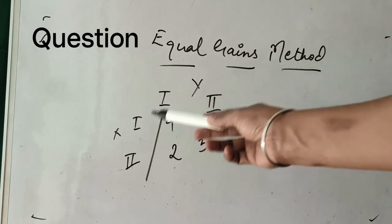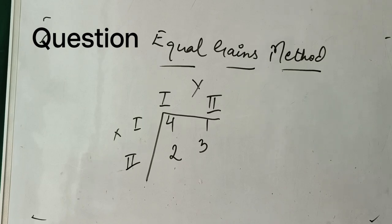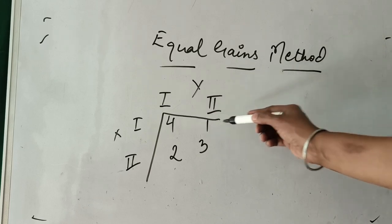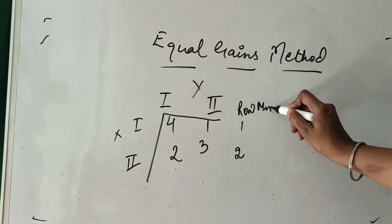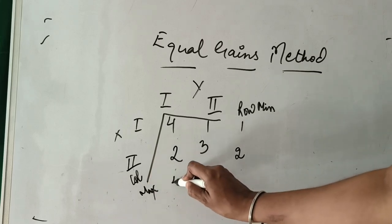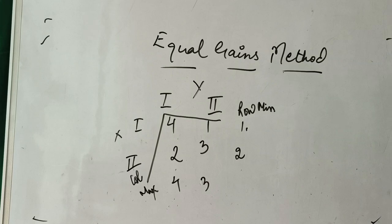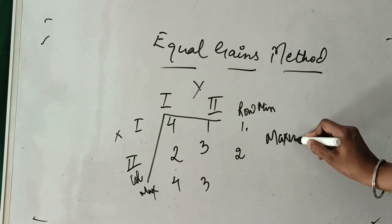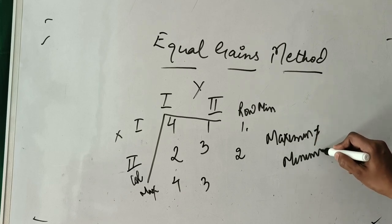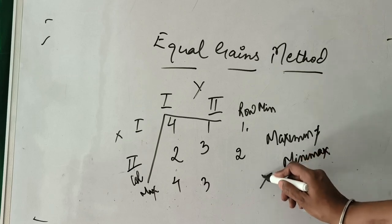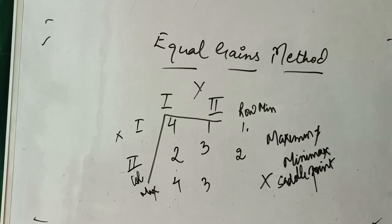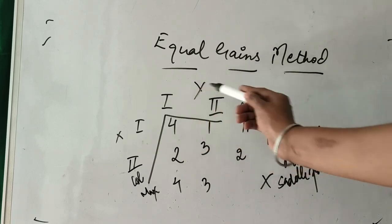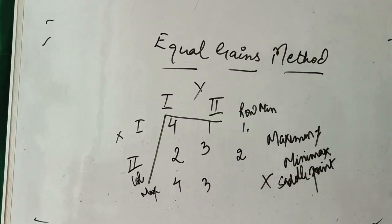Player X is the maximizing player here and player Y is the minimizing player. So first of all, let us check whether the game has a saddle point or not. Taking the row minima, it is 1 and row Y's minimum is 2. The column maxima are 4 and 3. Since none of the values match, maximin is not equal to minimax, which means the game does not have a saddle point. When the game does not have a saddle point, it cannot be solved with pure strategy. We move ahead towards mixed strategy, and in mixed strategy, when the game is of 2×2 size, we can use the equal gains method or the probability method.